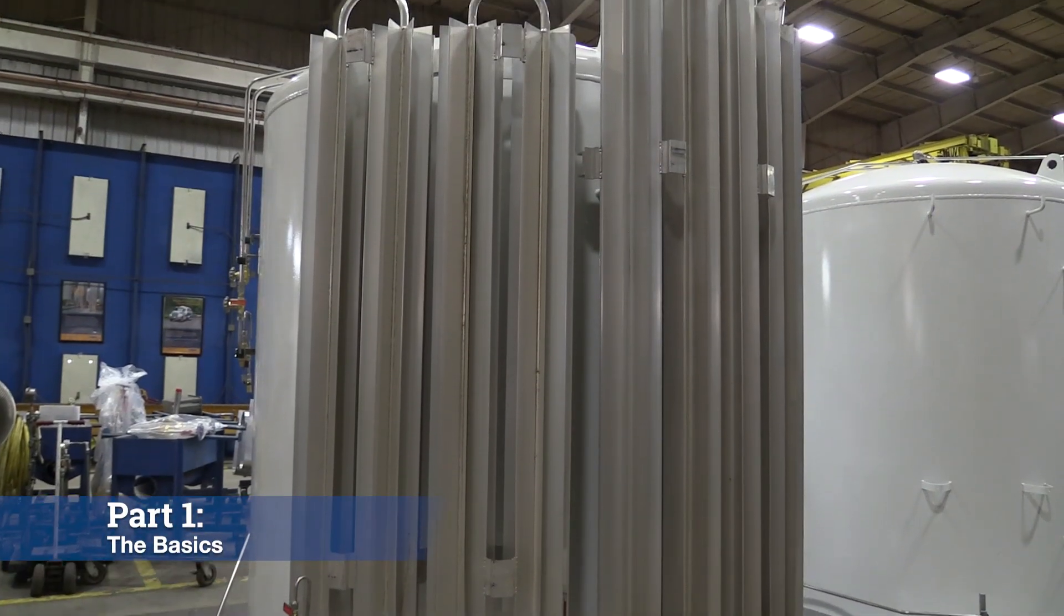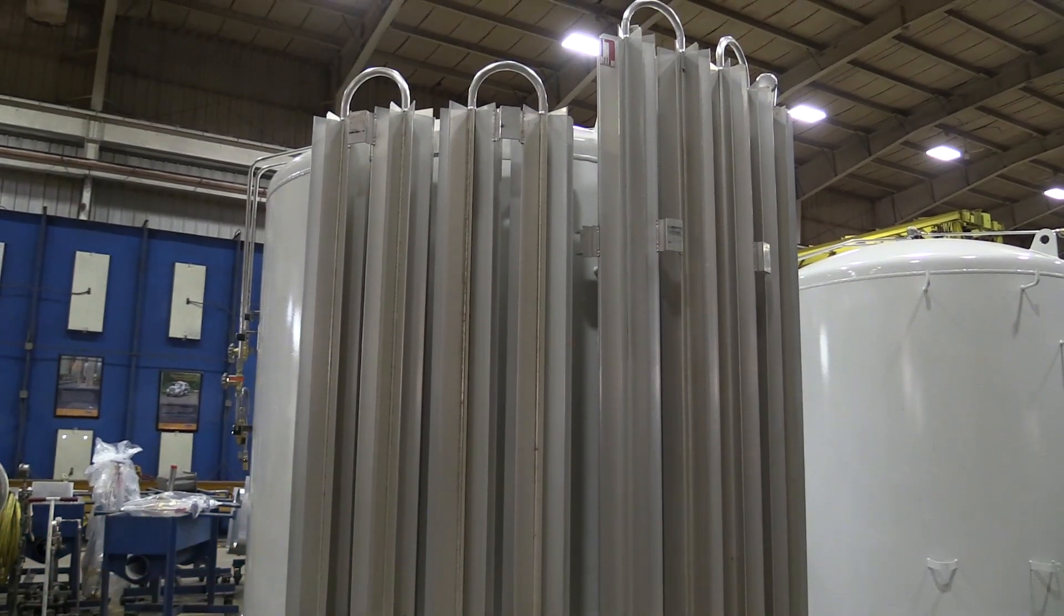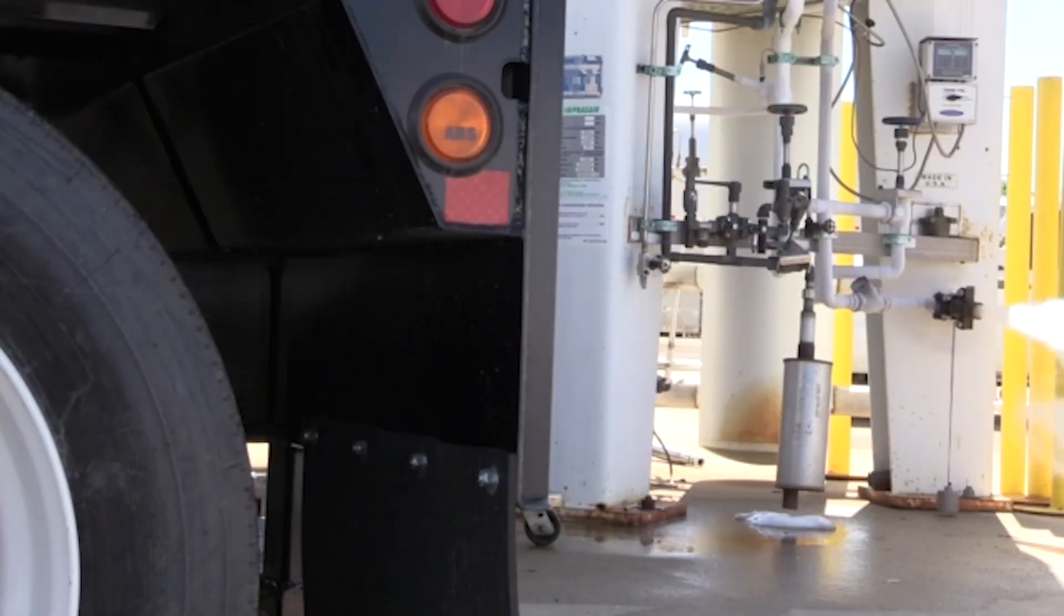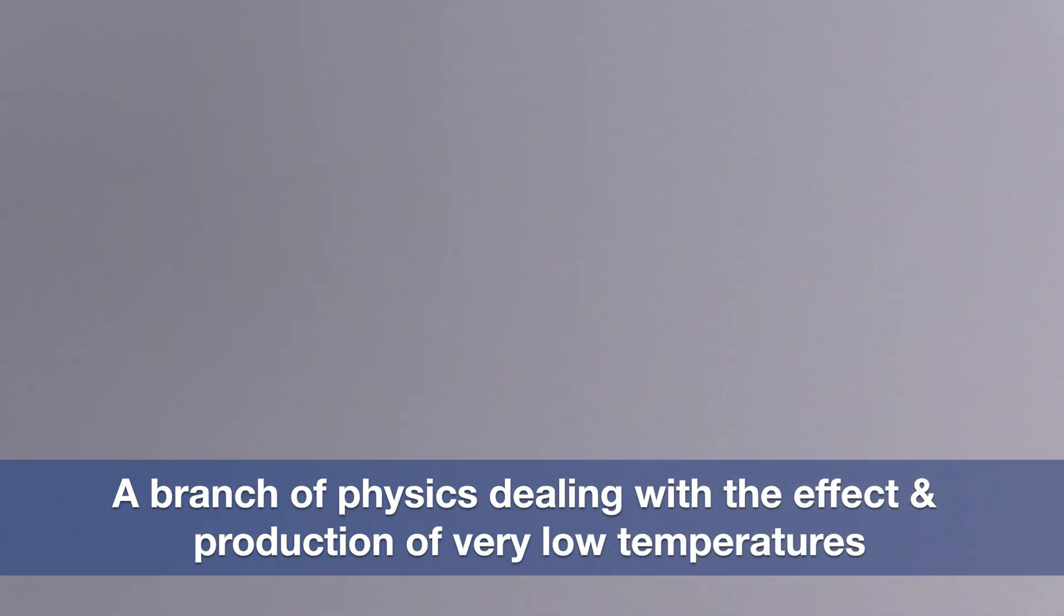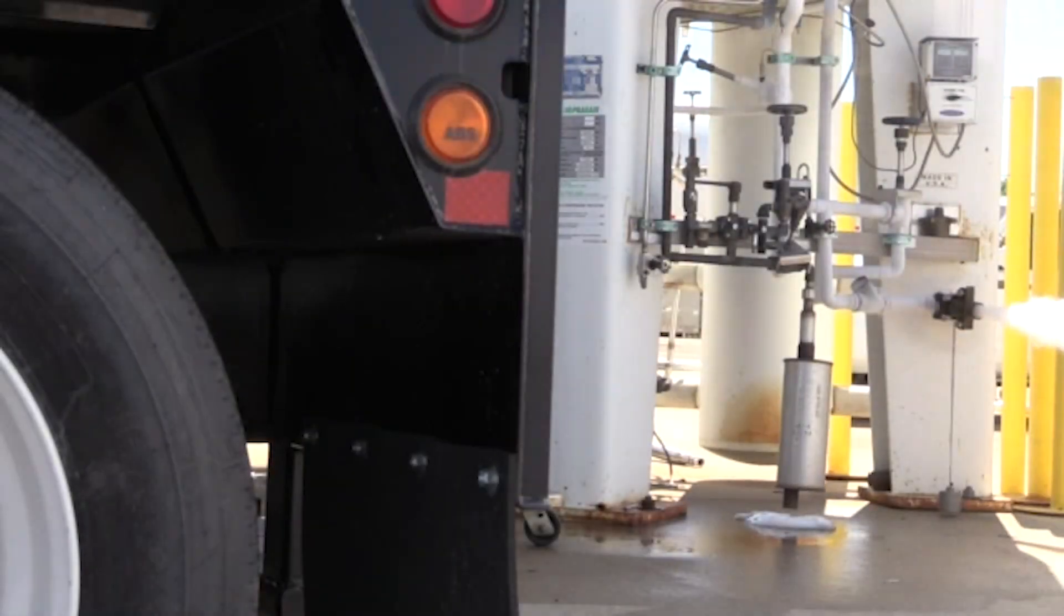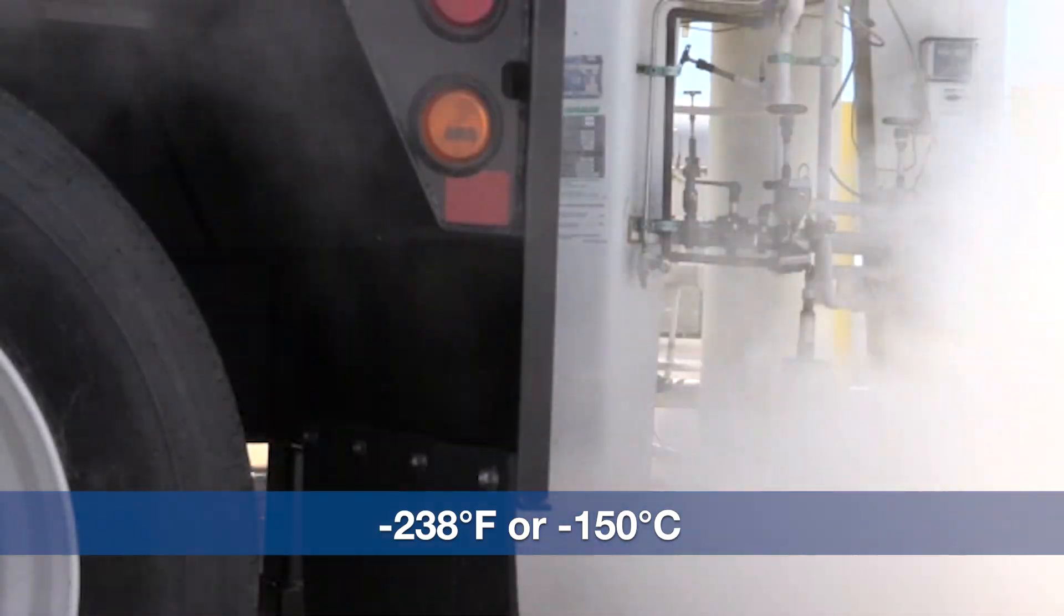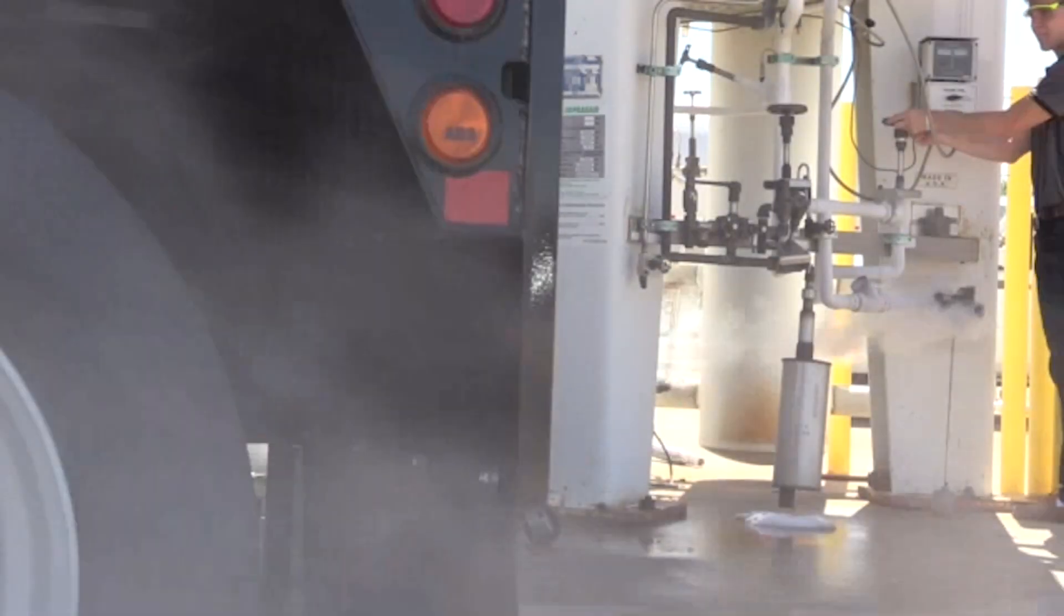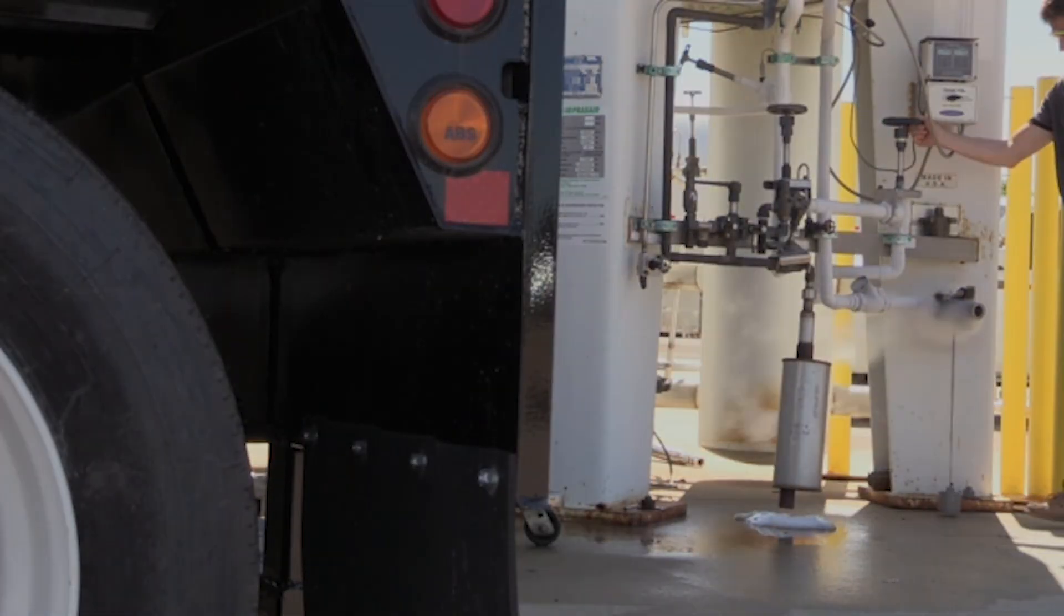Let's start with the basics. What is cryogenics? By its technical definition in Webster's Dictionary, cryogenics is a branch of physics dealing with the effect and production of very low temperatures. Scientists consider low to be anything less than negative 238 degrees Fahrenheit. So why exactly does this make handling gas more efficient? Cryogenic temperatures allow us to store and handle atmospheric gases at pressures that keep them in a more compact liquid state.